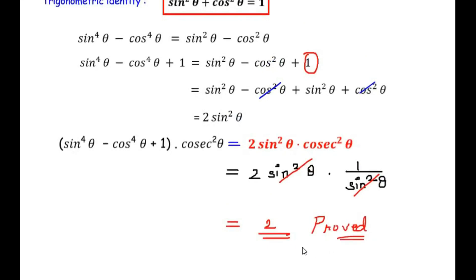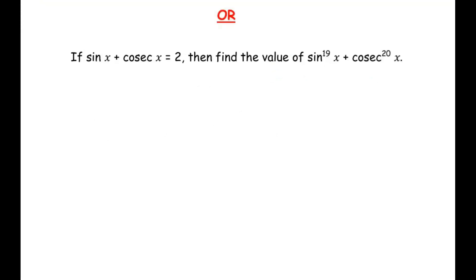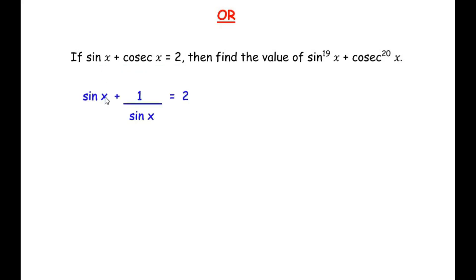Now let us move on to the OR question. If sin x + cosec x = 2, then find the value of sin¹⁹x + cosec²⁰x. We begin by using the given condition sin x + cosec x = 2. Since cosec x is the reciprocal of sin x, we replace cosec x with 1/sin x, giving us sin x + 1/sin x = 2.